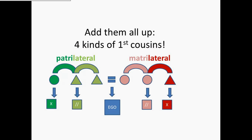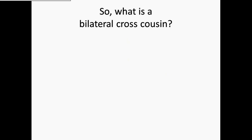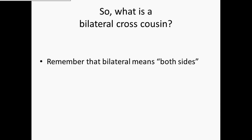If we add all of these up, we come up with four kinds of cousins: patrilateral cross and parallel cousins, and matrilateral cross and parallel cousins. This brings us to our big question: what is a bilateral cross cousin? Remember that bilateral means both sides, so somehow a bilateral cross cousin has to be a cousin on both sides. How can that happen?